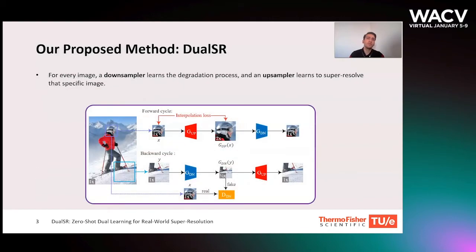To solve this problem, we present Dual SR, a dual-pass pipeline inspired by the CycleGAN architecture. Dual SR can be trained in reasonable time using only patches of the input image, and it doesn't need any external dataset for training. In this architecture, G-Up is the upsampler that trains to upsample the specific input image, while G-Down is the downsampler that learns the degradation process for the input image.